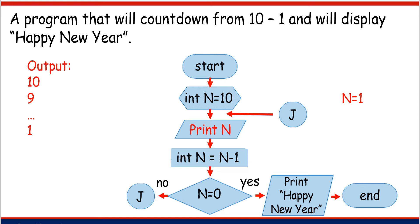Fast forward. Let's assume we already have 1 as the value of n. Print n, or print number 1. Then process: int n is equal to n minus 1. 1 minus 1 is equal to 0 — the new value of n is 0. Decision symbol: n equals 0, or 0 equals 0 — the answer is yes. So we go to the yes direction. The program will print the word Happy New Year, and then the program is finished.